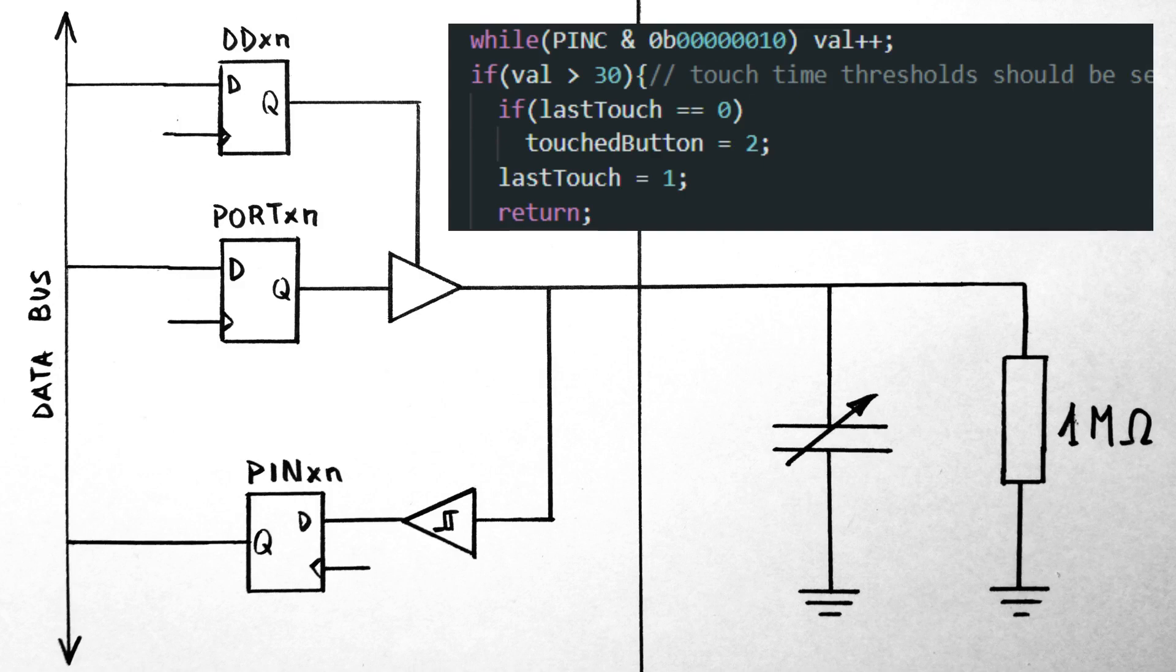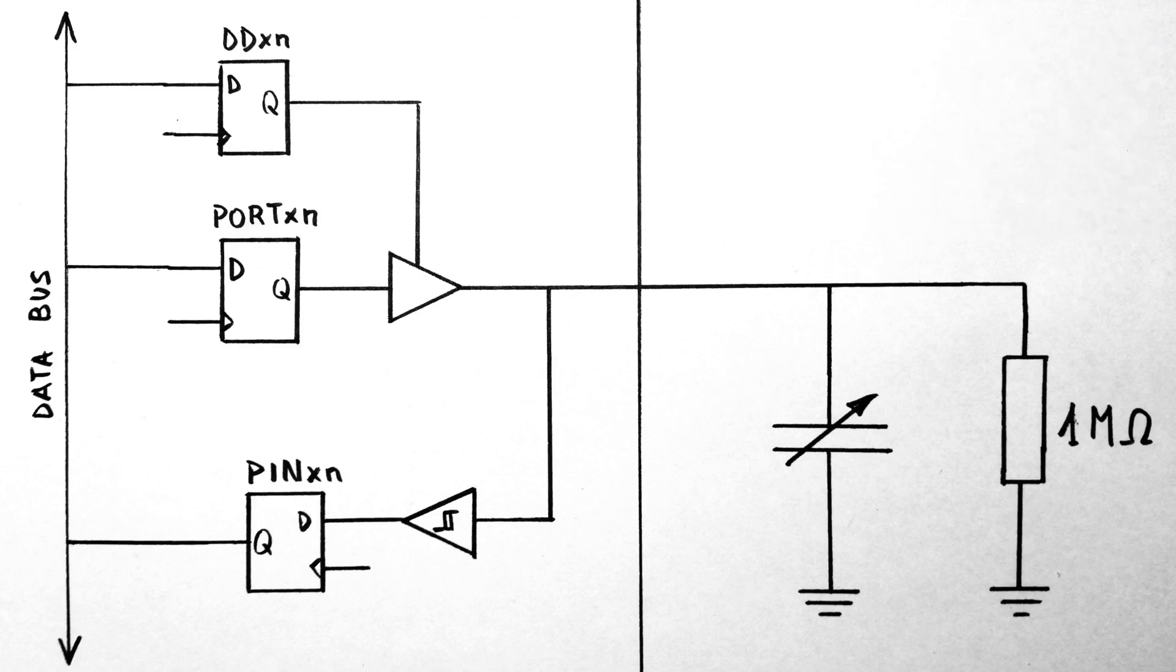All we have to do then is check if the time passed is more or less than a set amount that we can determine by testing it, and that will tell us if someone's touching the pad or not. I use the direct register access to make it a lot faster.